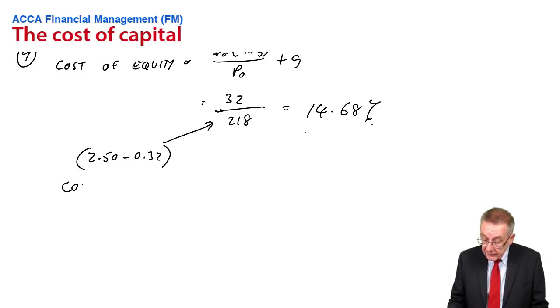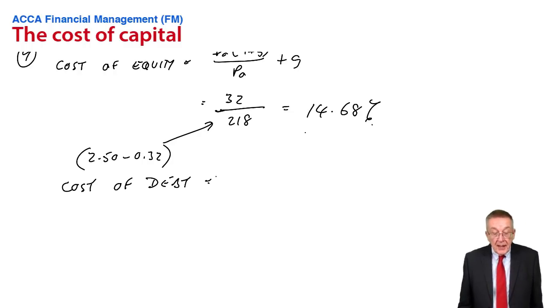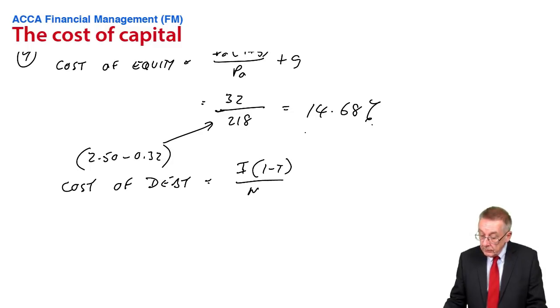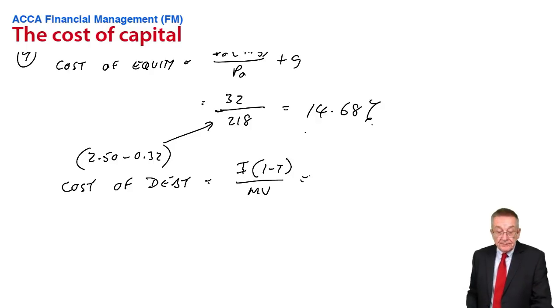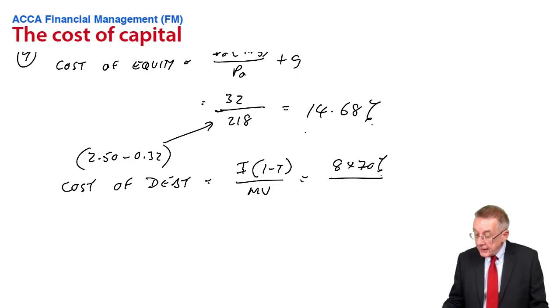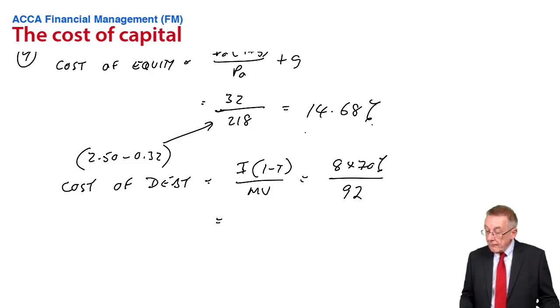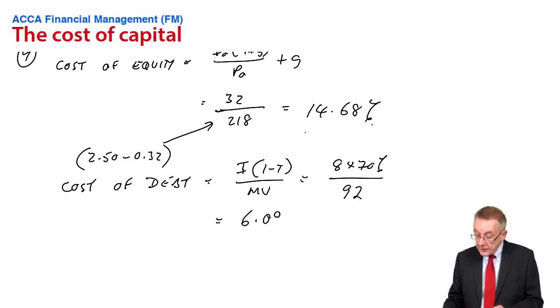Separately, what about the cost of debt? A nice easy one because there's no mention of any redemption, and if you're not told about redemption, we always assume it's irredeemable. The cost of irredeemable debt is simply the after-tax interest over the market value. On $100 nominal, the coupon rate interest is $8 a year. Tax is 30%, so the net cost after tax is 70% of 8, and a market value of 92 gives the cost of debt 6.09%.